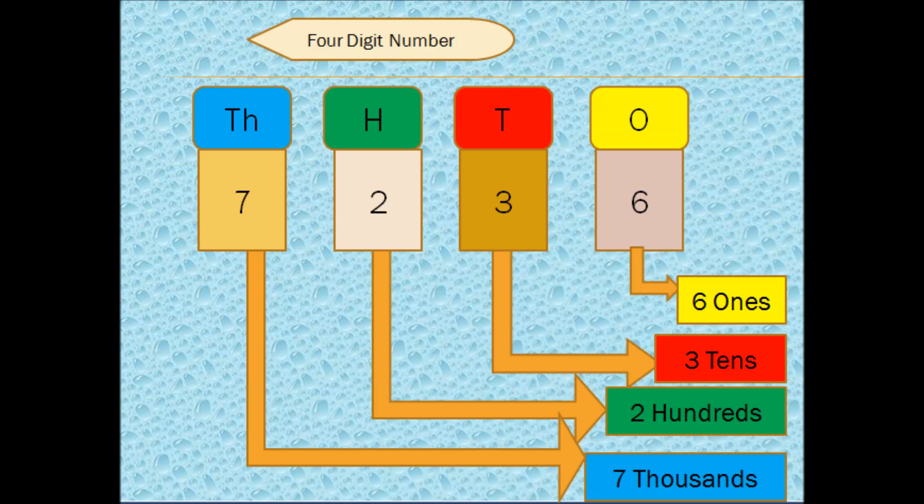Now let us see what will be the place value of each digit in the number 7236. So the digit 6 will have its place value as 6 ones.